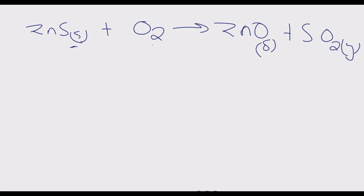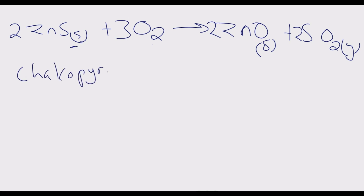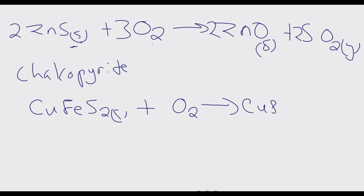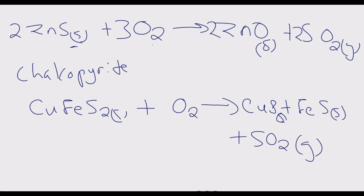When we balance that equation we introduce the appropriate coefficients. The second case is getting copper sulfide from chalcopyrite: reacting chalcopyrite as a solid with oxygen gives copper sulfide plus sulfur dioxide. What you notice in both cases is that sulfur dioxide is produced. Sulfur dioxide reacts with rainwater to form sulfuric acid, which is a pollutant that inhibits the growth of plants.